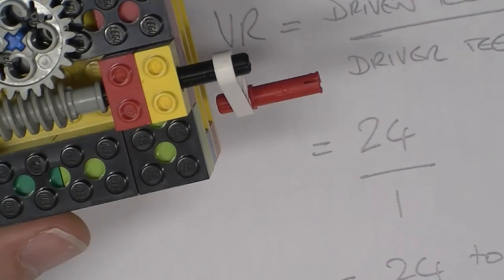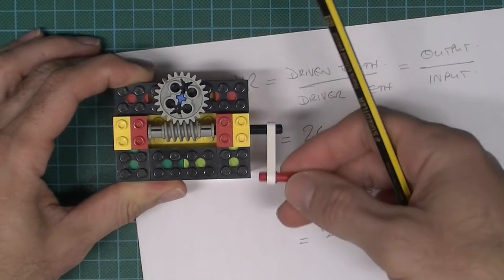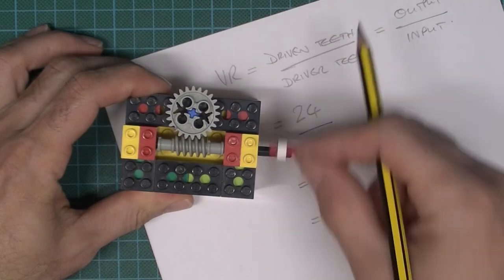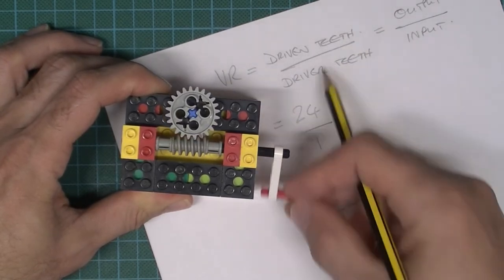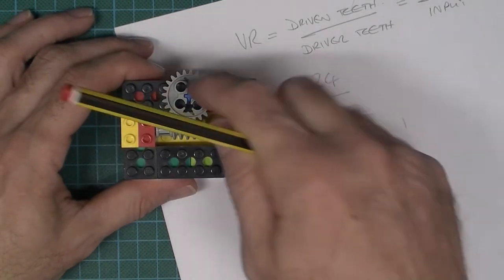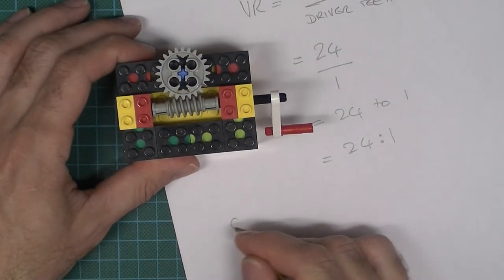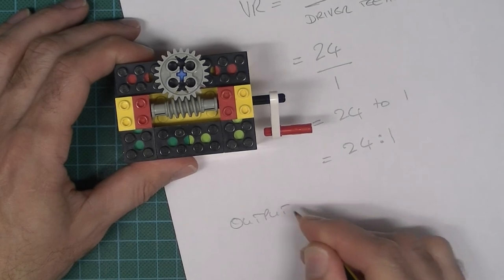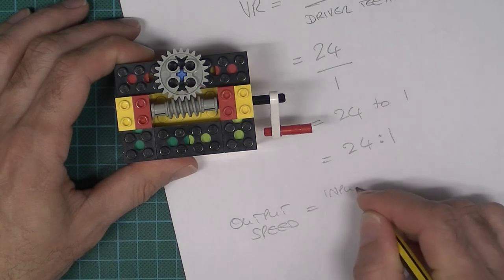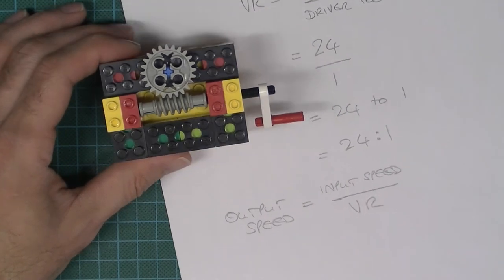So what else might you want to calculate? Well, it might be that you know the input speed. Input speed can be measured in revolutions per minute. Say if I was doing that very fast, say if I was doing that at 480 times a minute, how fast was the worm wheel going? Well, that's easy to calculate. So the output speed will be equal to the input speed divided by the velocity ratio, and that's what we had earlier, isn't it?